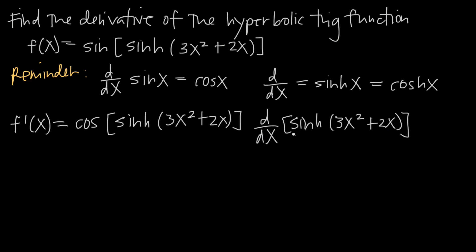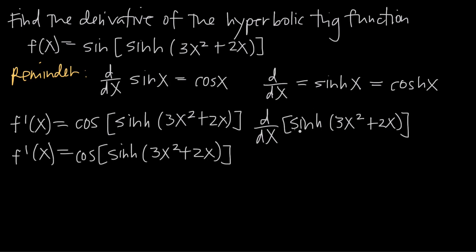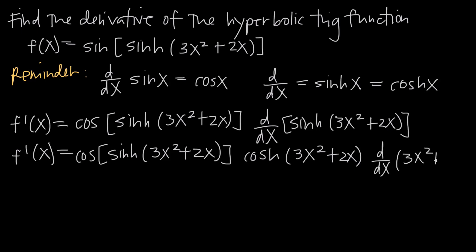Now we need to find the derivative of hyperbolic sine. Again, we apply chain rule: hyperbolic sine is the outside function, and 3x squared plus 2x is the inside function. We take the derivative of the outside function first. The derivative of hyperbolic sine is hyperbolic cosine, so we write hyperbolic cosine and leave the inside function alone. Then chain rule tells us to multiply by the derivative of that inside function, 3x squared plus 2x.